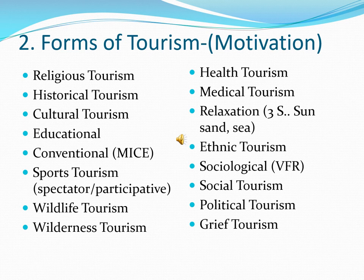Social tourism means engaging in tourism for the welfare of society or weaker sections — for example, taking poor children from slums on a sightseeing trip, or organizing tours for the handicapped or elderly. Political tourism is going to travel and participate in political events such as political meetings, conferences, fests, or witnessing events like a royal coronation or a royal wedding.